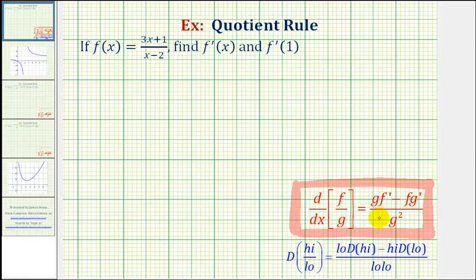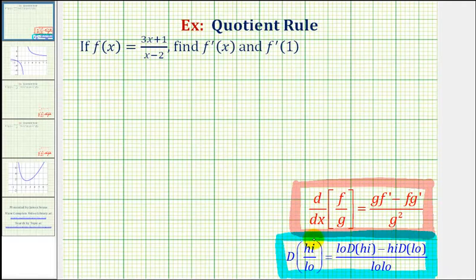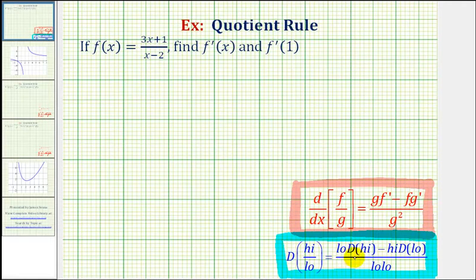As you can see, the quotient rule is fairly involved. One way to help remember it is given here in blue: if big D represents the derivative, high represents the function in the numerator, and low represents the function in the denominator, we can state the quotient rule as low D high, minus high D low, low low. Saying this several times will help you remember the quotient rule.